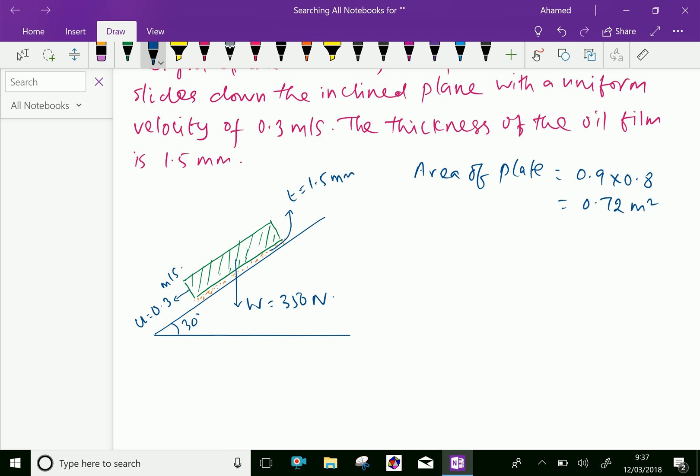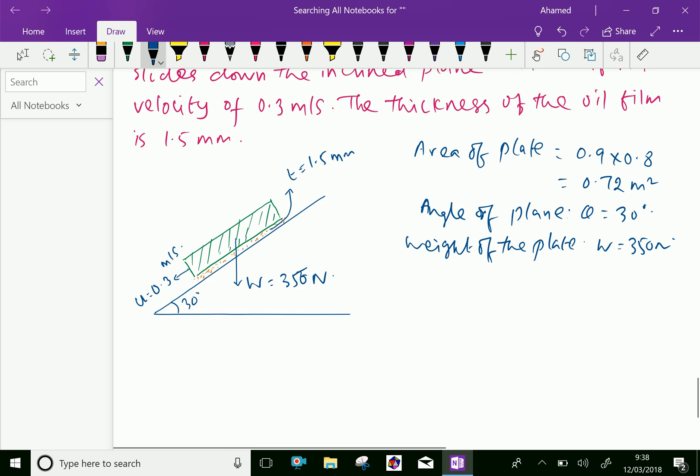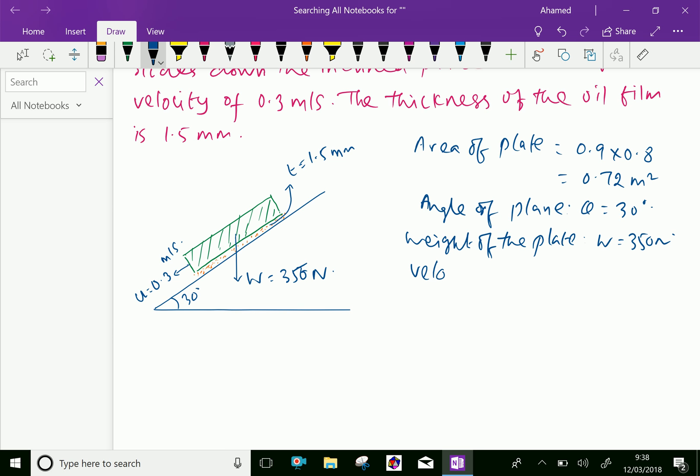Angle of inclination of plane, theta equals 30 degrees. Weight of the plate, W equals 350 Newton. Velocity of the plate which slides down, u equals 0.3 meter per second.